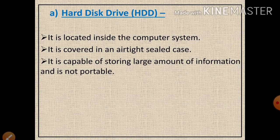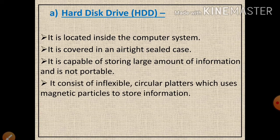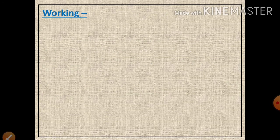Unlike a pen drive, where the data is portable and we can carry it easily everywhere, the hard disk drive is not like that. It consists of inflexible circular platters which use magnetic particles to store information.